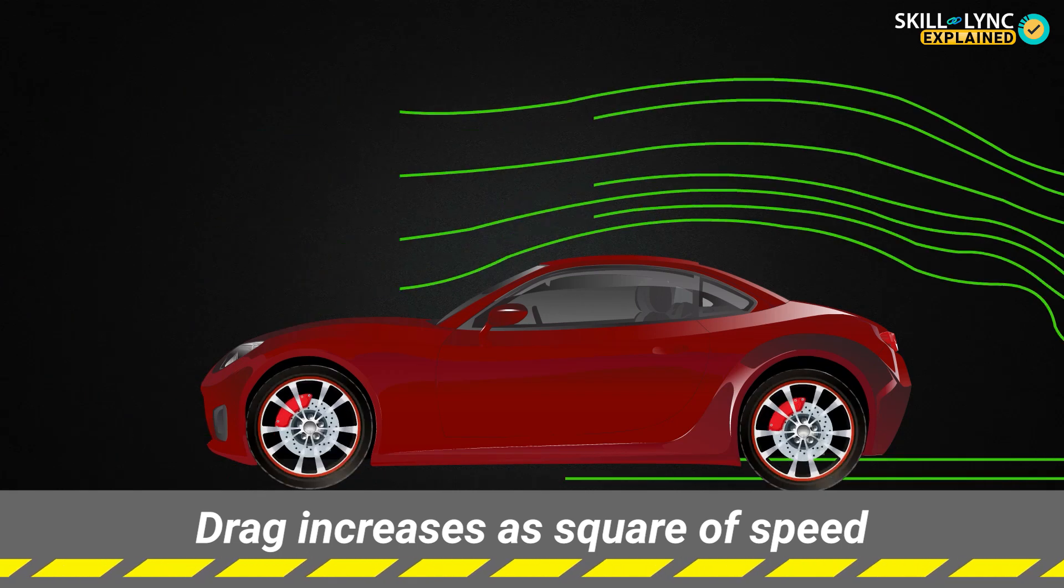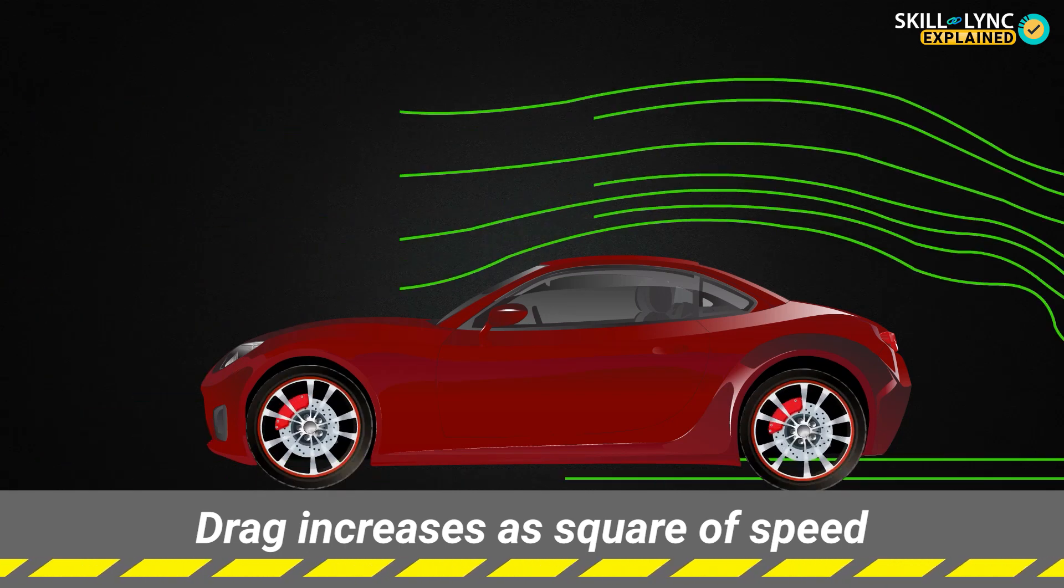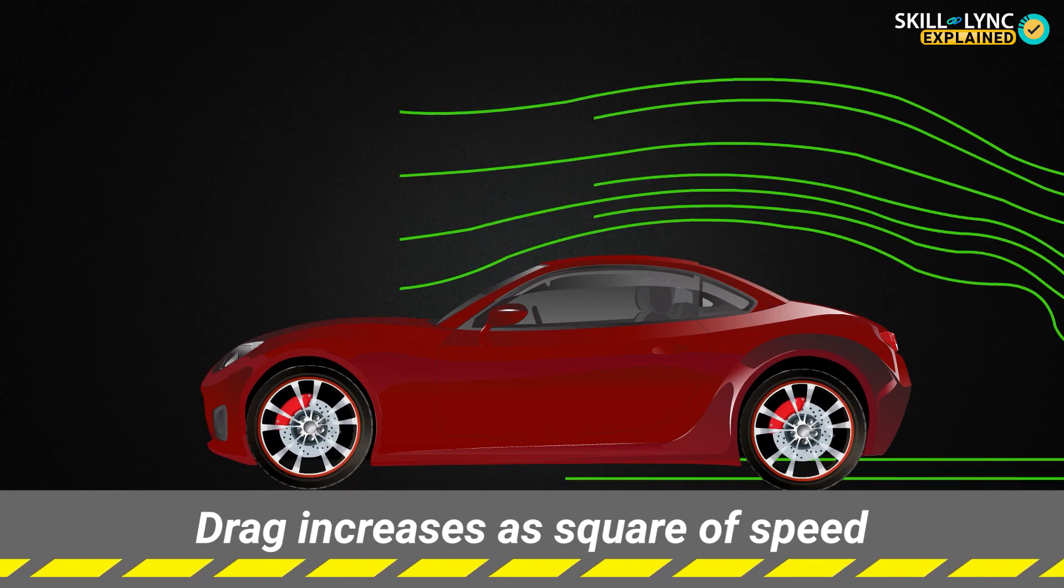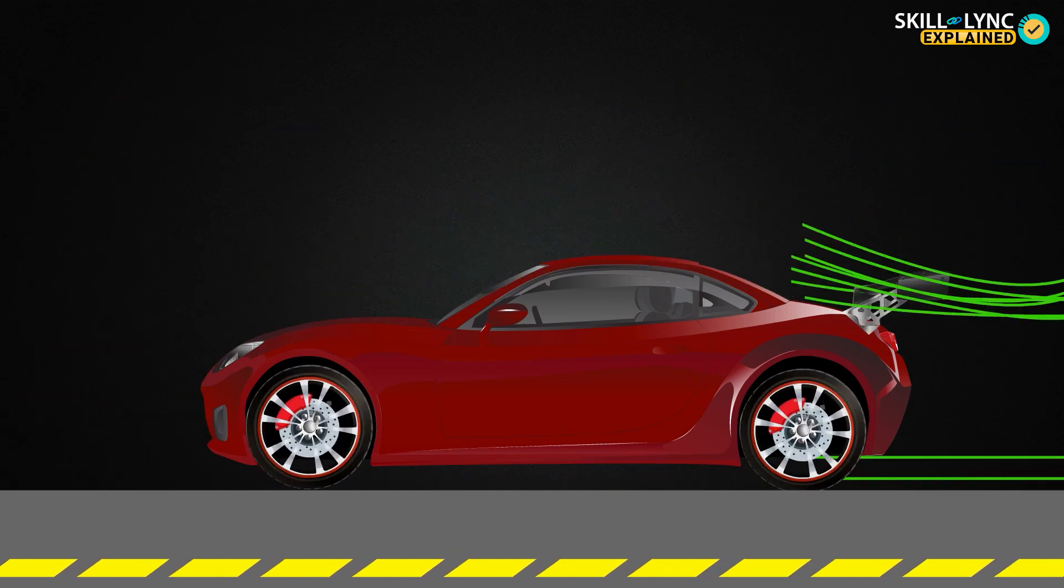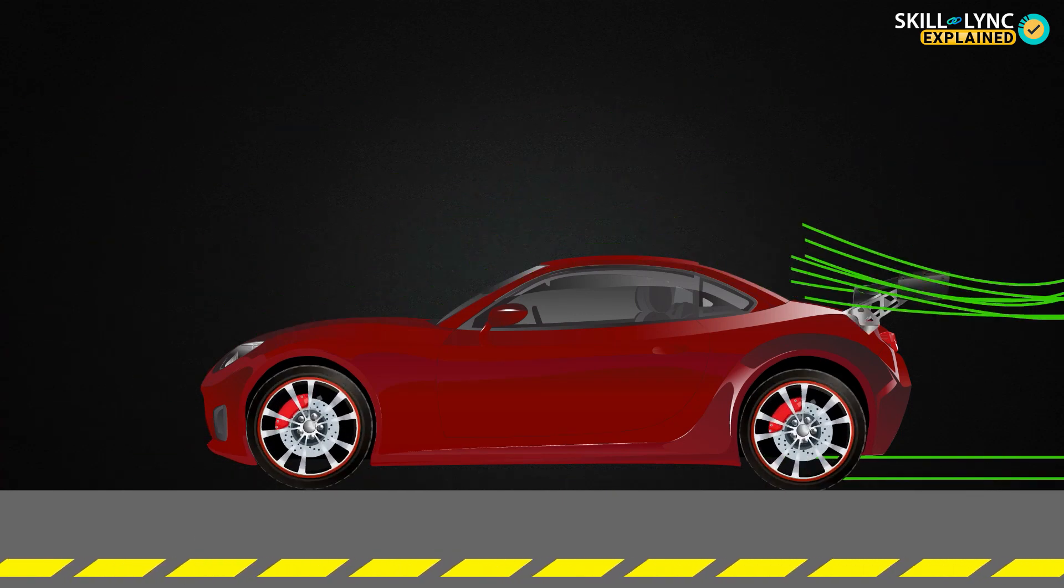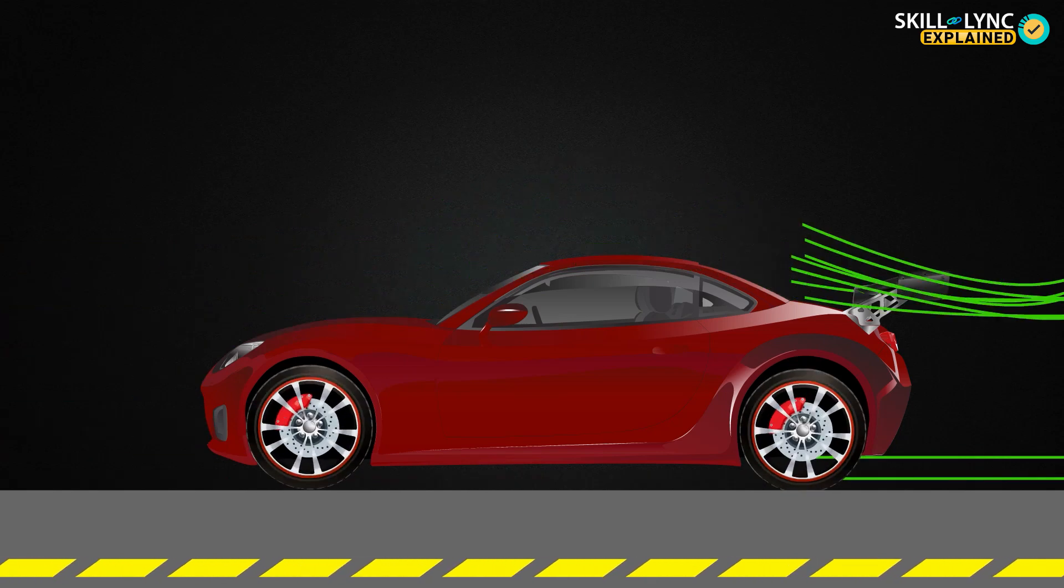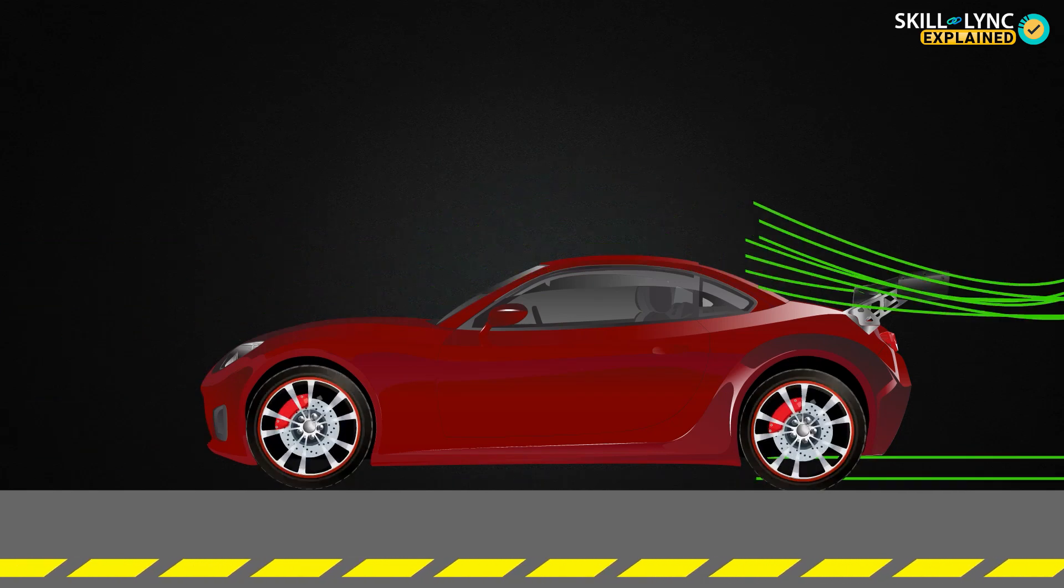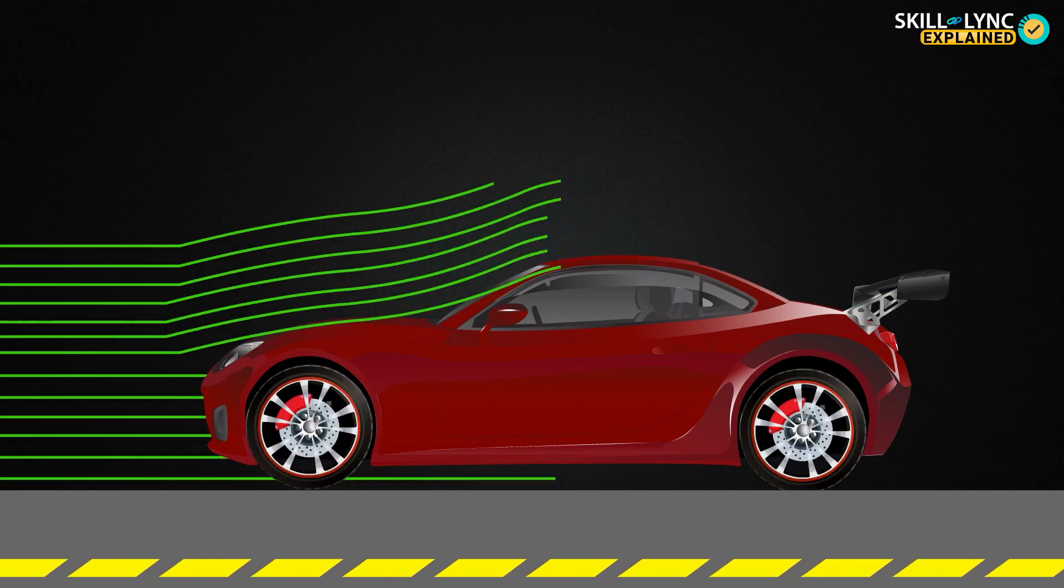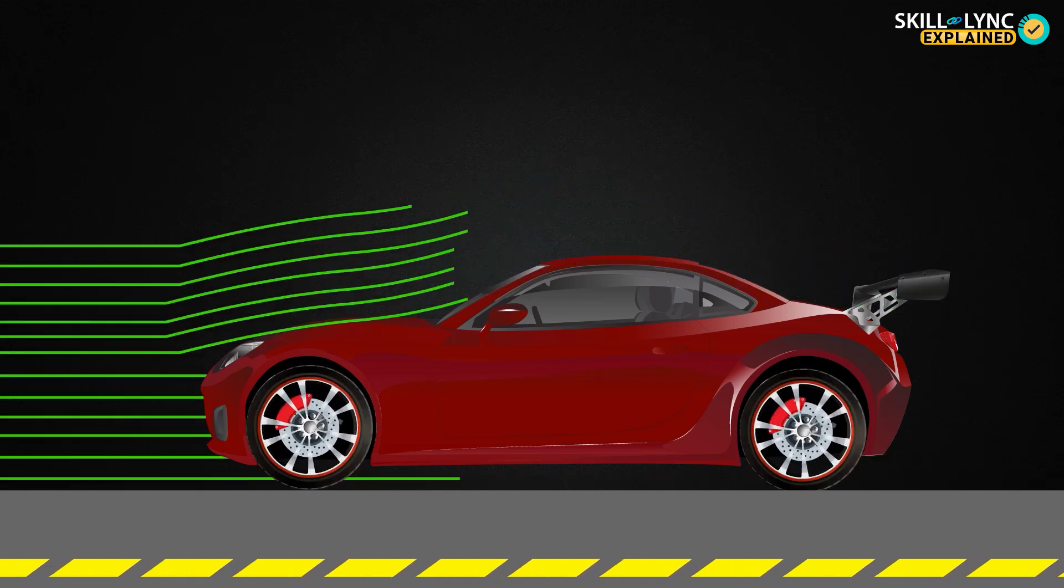The drag force increases as the square of the speed. So, the greater the speed, the greater will be the drag force experienced. Now, if a spoiler is added at the back, then, as you can see, the airflow will be comparatively smoother as compared to having no spoiler. This reduces the drag effectively.